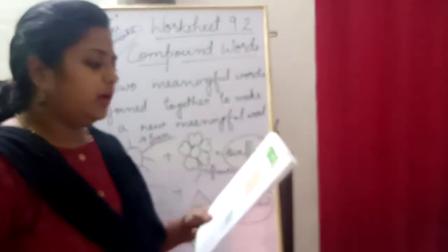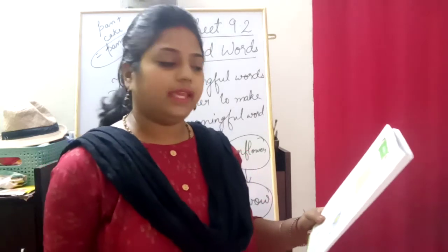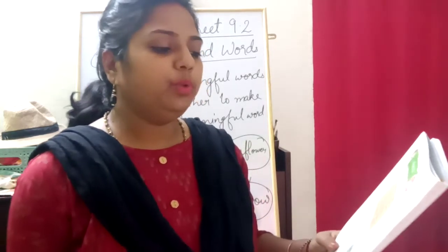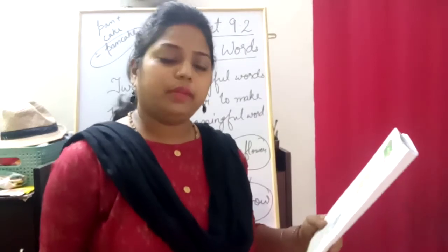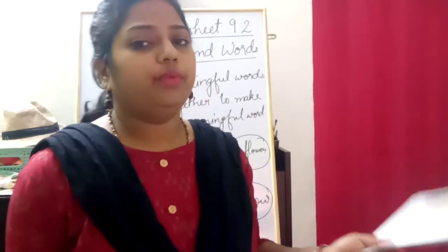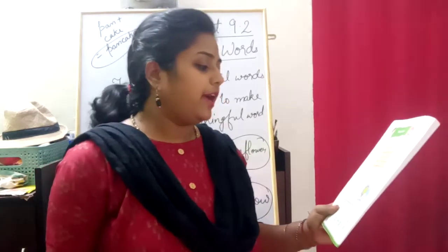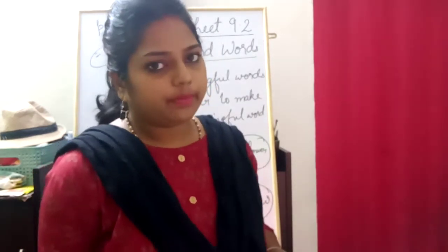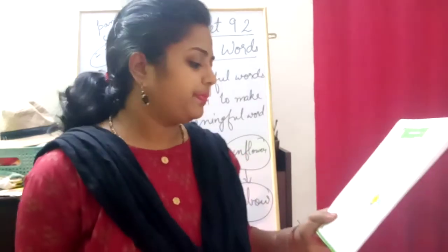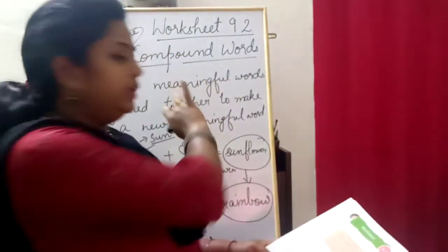Now let's move to the examples in your worksheet. Read this poem — what is unusual about the bold words? 'The butter plus fly made a pan plus cake, the grass plus hopper made a blue plus berry pie, then they invited the jungle to dine, the picnic was laid under the sun plus flower, with the camp plus fire to keep everyone warm.' Yes, they are all two words joined together to make a completely new word — these are compound words. Some more examples: sun plus shine becomes sunshine, class plus room becomes classroom, black plus board becomes blackboard.